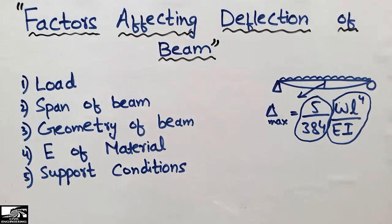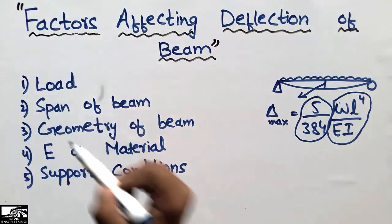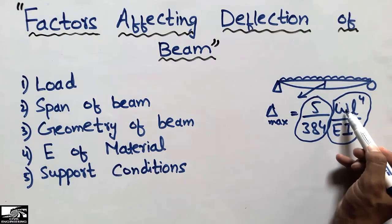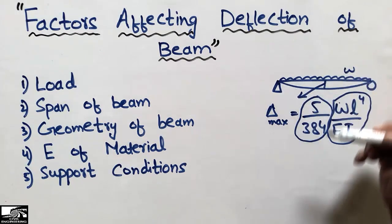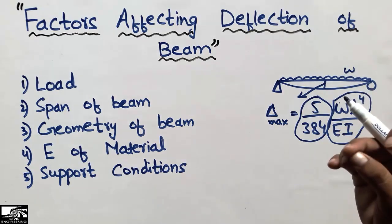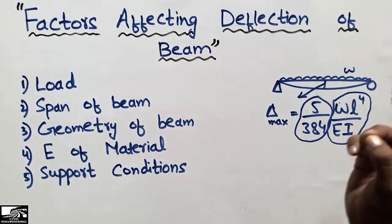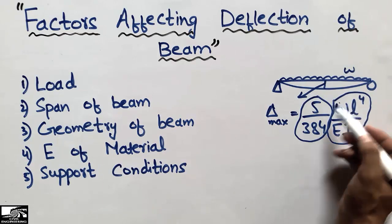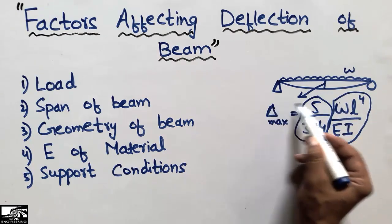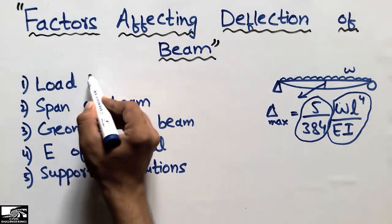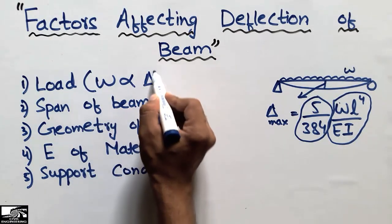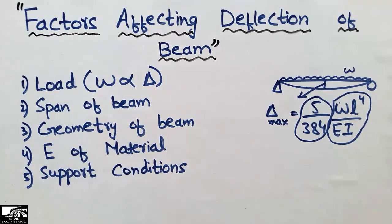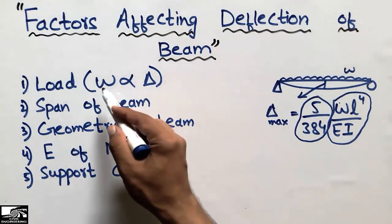The first factor is the load, represented by W. With the increase of the load, the beam deflection increases. If we place a smaller load on the beam, it will deflect less; if we increase the load, the deflection will increase. So load W has a direct relation with deflection — it is directly proportional to deflection.